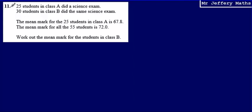This is question 11. I'm told that 25 students in class A did a science exam, and that 30 students in class B did the same science exam. The mean mark for the 25 students in class A is 67.8, and the mean mark for all 55 students is 72. I'm asked to work out the mean mark for the students in class B.